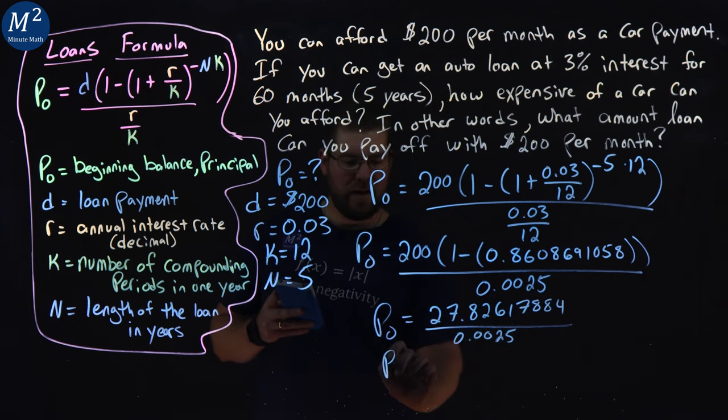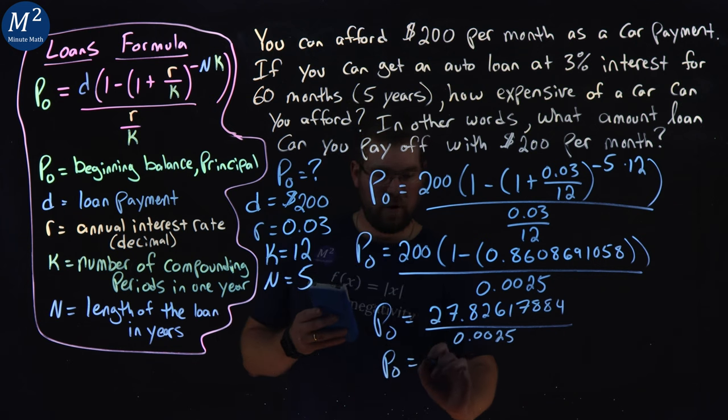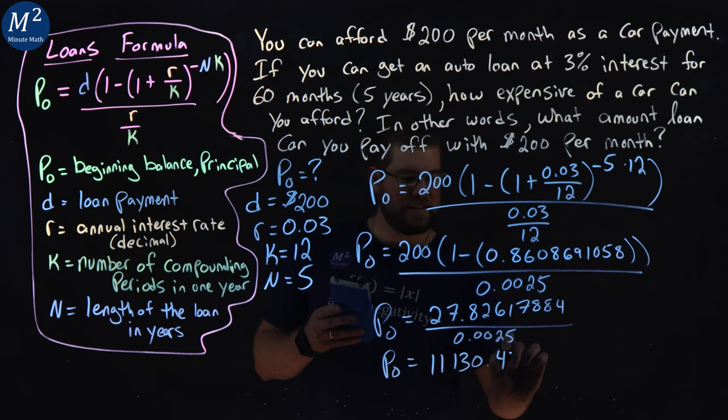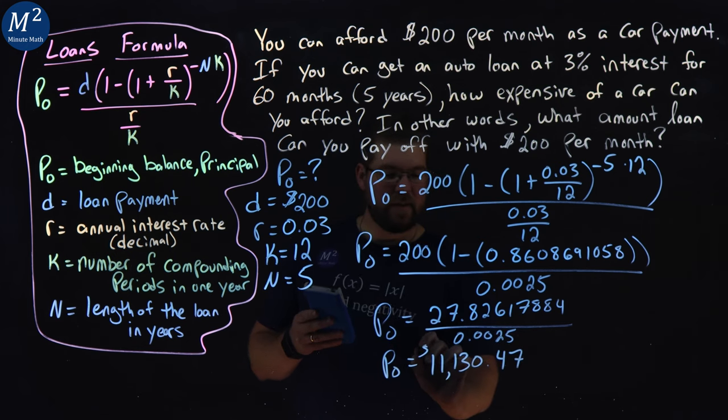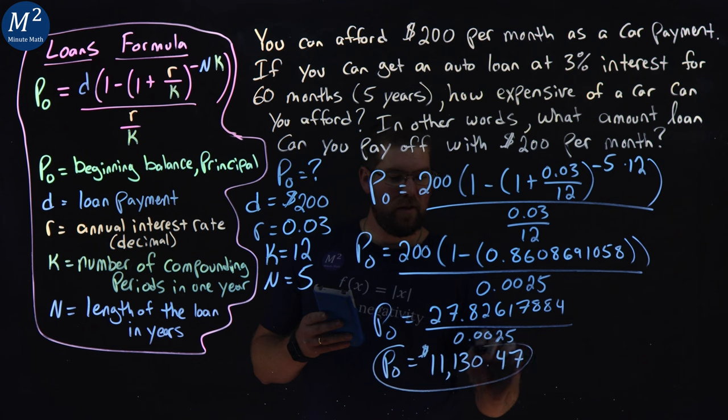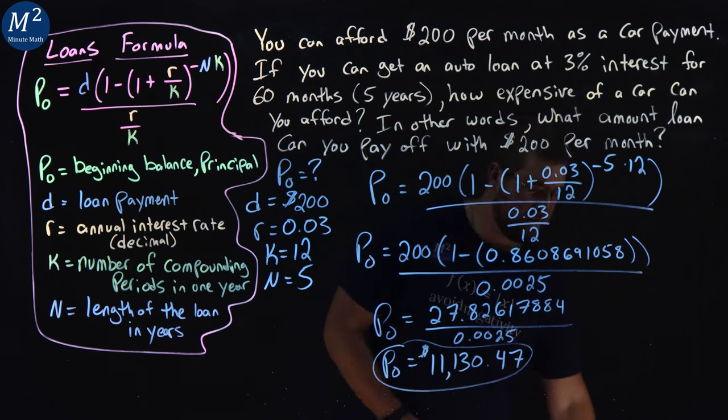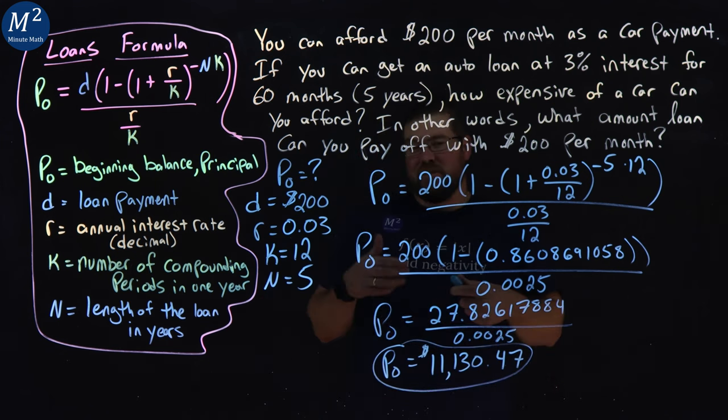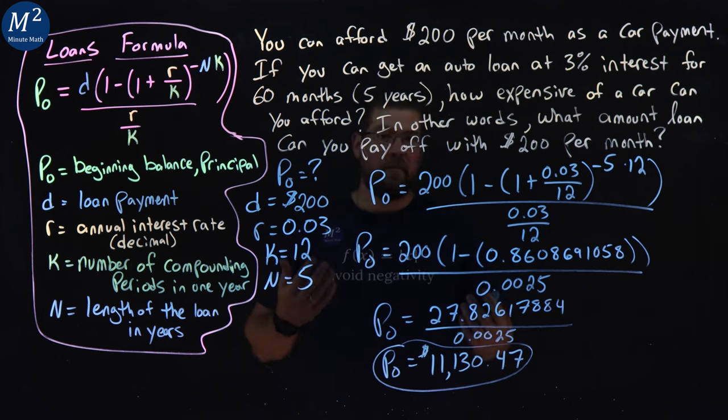And we get a loan amount, P sub O of 11130.47 rounded. That's $11,130.47. And that is the largest car loan that we can afford.